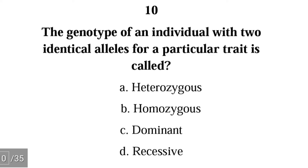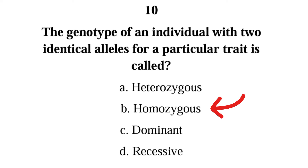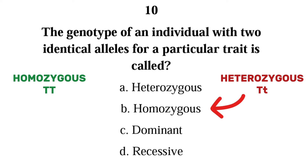Number ten: the genotype of an individual with two identical alleles for a particular trait is called — heterozygous, homozygous, dominant, or recessive. The correct answer is B, homozygous. Homozygous is when you have two similar alleles for a particular gene, like having two capital T's for height instead of capital T and small t.